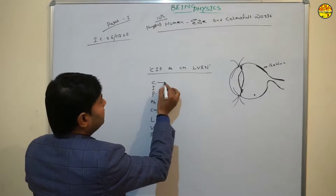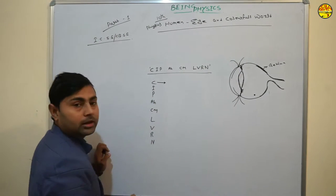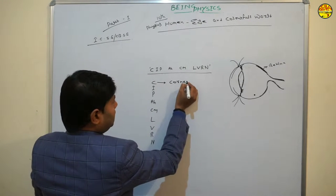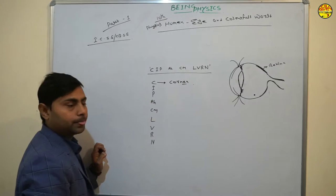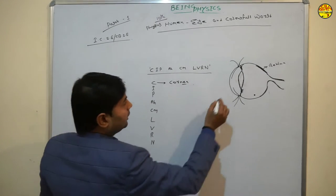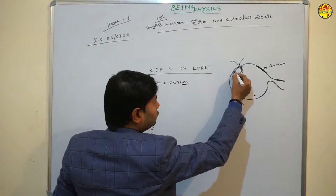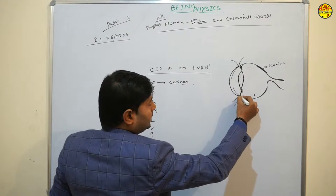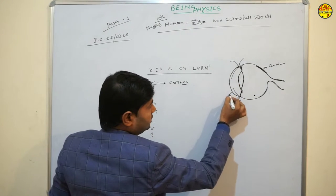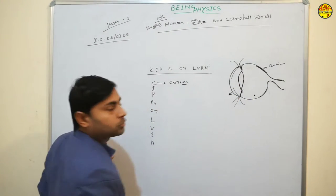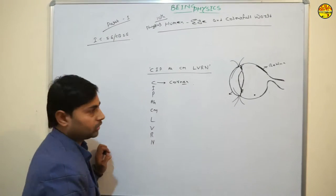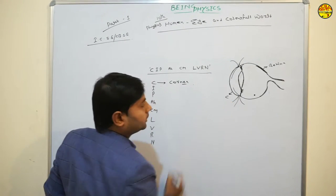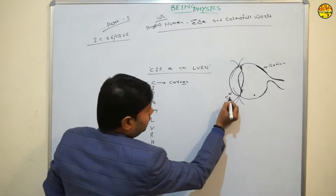C means Cornea. Cornea is the first layer of our eye. This is your cornea — the first layer of our eyes is called the cornea. It is the outermost transparent layer of the eye.